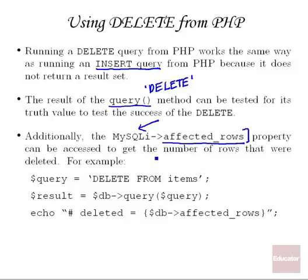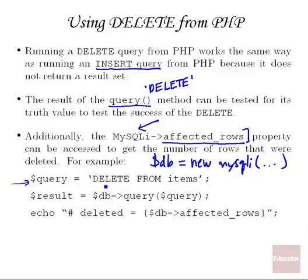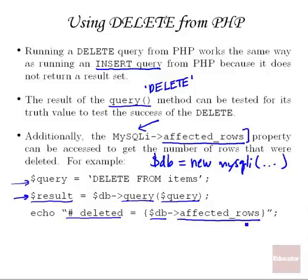Assuming our database variable is an instance of a MySQLi object, we can create a query string that says DELETE FROM items. We call the query method on the MySQLi object, pass it the DELETE query, and then test the result to see whether it was true or false to check if the query succeeded. We can also output the number of rows deleted by accessing the affected_rows property of the MySQLi object, which tells you the number of rows affected by the last operation — in this case, the DELETE FROM items operation.